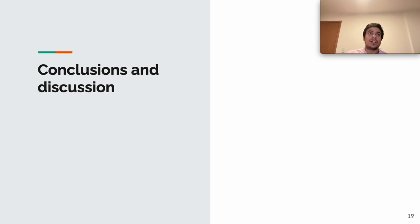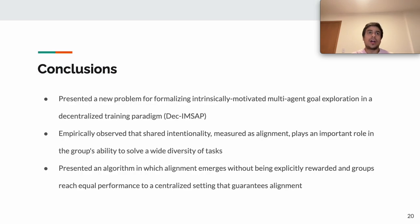Let's go to the conclusions and discussion. So we presented a new problem for formalizing intrinsically motivated multi-agent goal exploration in a decentralized training paradigm, the Dec-IMSAP. We also empirically observed that shared intentionality, measured as alignment, plays an important role in the group's ability to solve a wide diversity of tasks. Finally, we presented an algorithm in which alignment emerges without being explicitly rewarded and groups reach equal performance to a centralized setting that guarantees alignment.